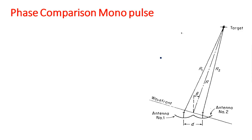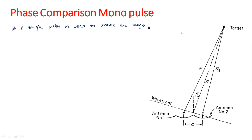In phase comparison monopulse tracking radar, a single pulse is used to track the target from two separate antennas. This is the main concept. In the previous amplitude comparison monopulse tracking radar, we used a single plate with two feeds or four feeds depending upon one or two coordinate systems, but in the phase comparison radar we are using two separate antennas.